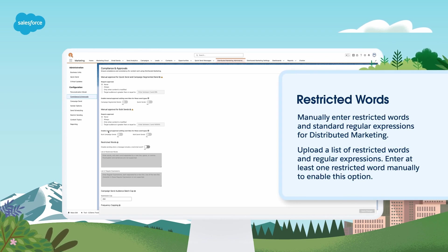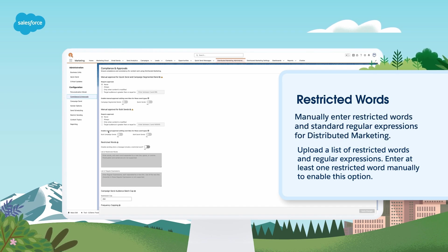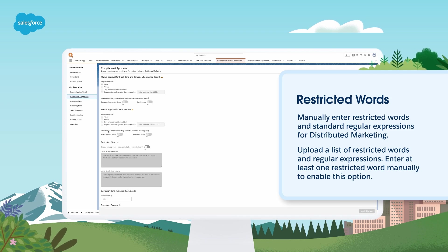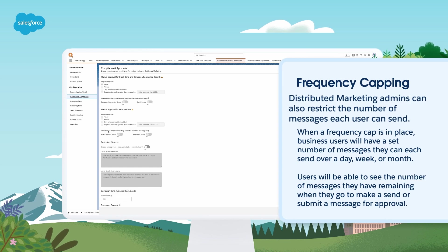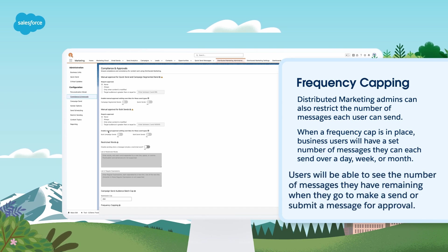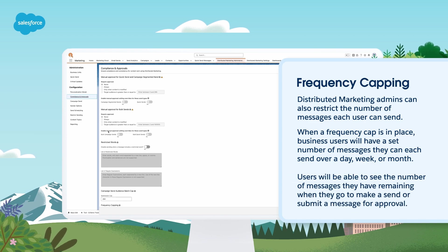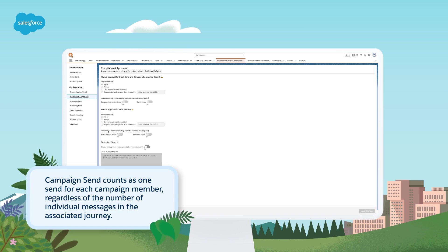Restricted words is another popular optional feature for distributed marketing. With this, you can restrict what words and expressions your business users can add to configurable parts of the message. When one of the defined words or expressions is detected in a rich or plain text area in a distributed marketing message, sending will be automatically disabled until it is removed. Distributed marketing admins can also restrict the number of messages each user can send. When a frequency cap is in place, business users will have a set number of messages they can each send over a day, week, or month. Users will be able to see the number of messages they have remaining when they go to make a send or submit a message for approval. Once they reach their cap, they won't be able to send again until the cap resets at midnight in the user's time zone. A campaign send counts as one send for each campaign member regardless of the number of individual messages in the associated journey.